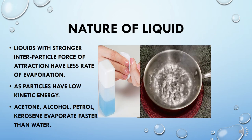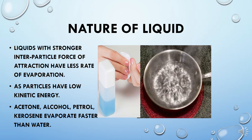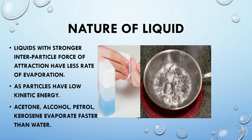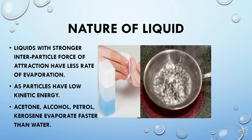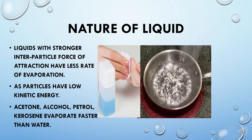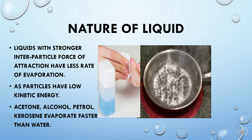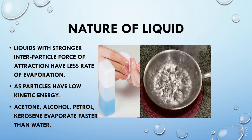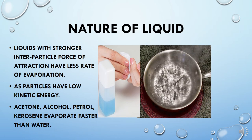The next important factor is the nature of the liquid. Different liquids have different inter-particle forces of attraction. Some liquids evaporate very fast — for example, nail polish remover used in daily life. It contains a chemical called acetone. When you keep acetone on your palm, it evaporates instantly. When you use it on your nails, they dry quickly because acetone evaporates faster. Various liquids have particles bound with very weak forces of attraction, so those particles escape the liquid faster than water. Acetone, alcohol, petrol, diesel, and kerosene are liquids that evaporate faster than water.